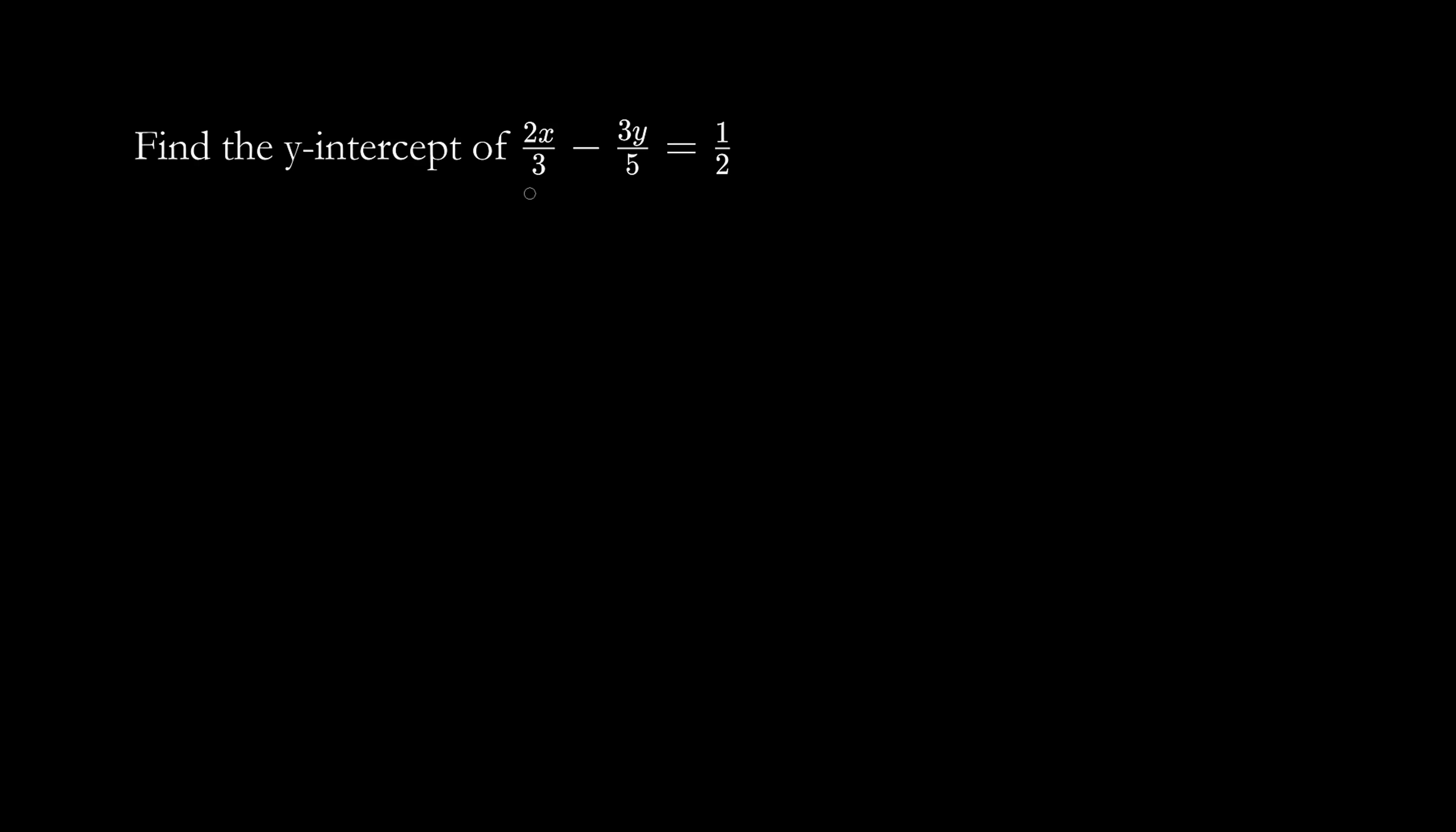Find the y-intercept of 2x/3 minus 3y/5 equals 1/2. To find the y-intercept, we set x equals 0.